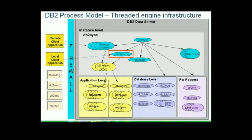A similar situation happens in the case of a remote client application, where a remote listener thread will be checking for connections from remote clients. There will be different listeners depending on the protocol being used. For example, for TCP/IP there is a listener thread called DB2TCPCM. Once a listener picks up a request, it will request an agent from the pool to handle the application.